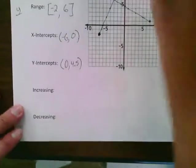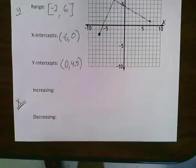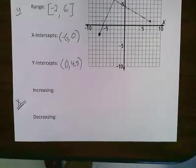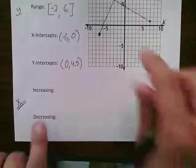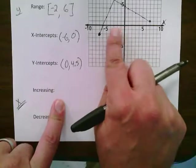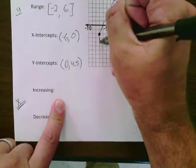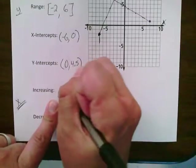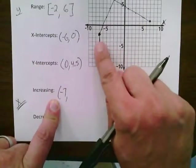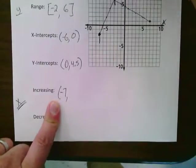But here's the catch. For increasing and decreasing, we only care about at what x values are we increasing or decreasing at. So I start increasing down here when x is at negative seven. So we start increasing at this point. So x is negative seven. As I move to the right, I stop increasing once I reach this high point right here.